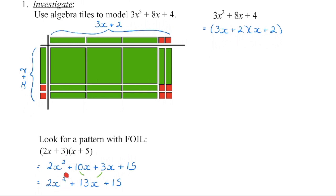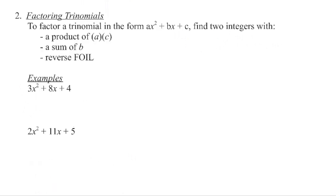We can see that this first squared term is a result of multiplying the first terms in each bracket. We can see that this last constant term is the result of multiplying the last terms in each bracket, and this 13x is a combination of the outside product and the inside product. So when we go to factor this trinomial, we're going to begin by saying what are the two numbers that we need that are going to multiply to the product of A times C and add to that B value, and then we're going to reverse the foiling process.